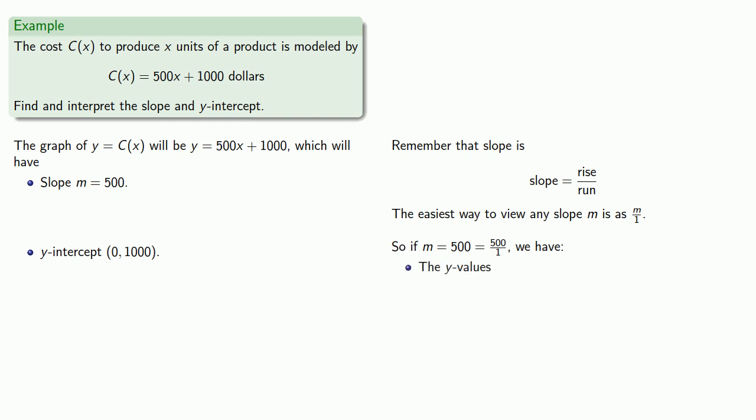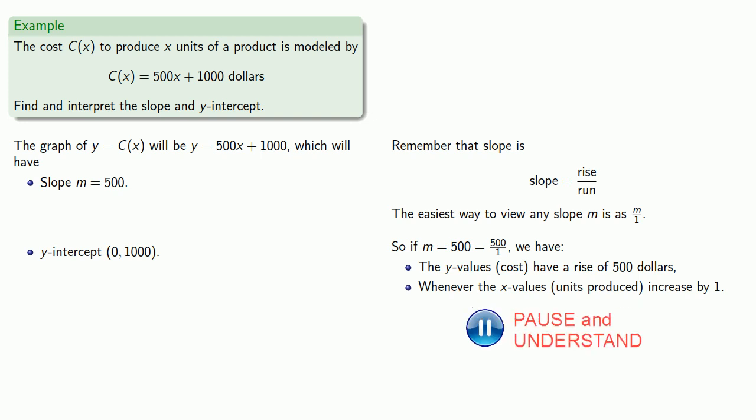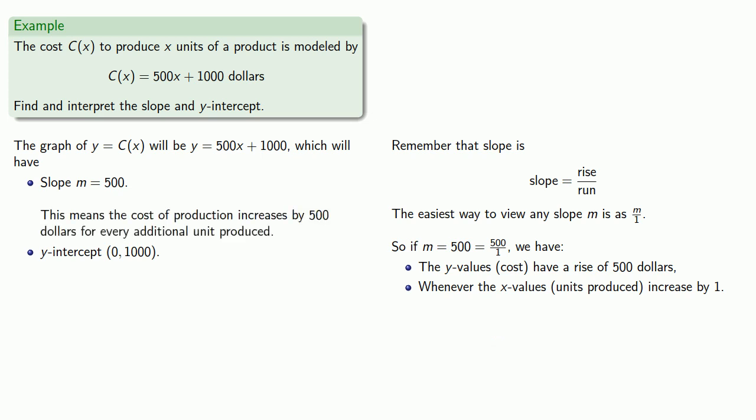The y values, well, y is c(x), that's our cost, have a rise of $500 whenever the x values, those of the units produced, increase by 1. And so we might interpret this as the cost of production increases by $500 for every additional unit produced. This is sometimes referred to as the marginal cost.